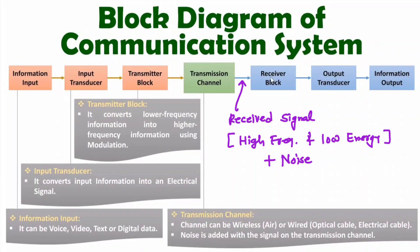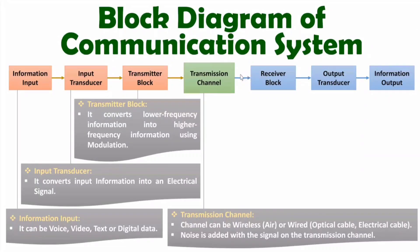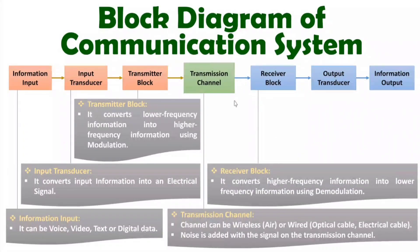After the transmission channel we have the receiver block. The receiver block converts high frequency information into low frequency information using demodulation, which is the opposite process of modulation. Inside the receiver block there is also an amplifier that converts the low energy signal into a high energy signal. So the receiver block performs demodulation as well as amplification.